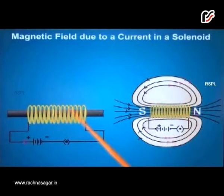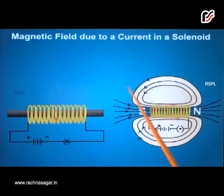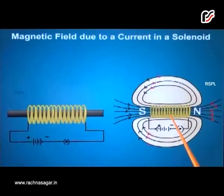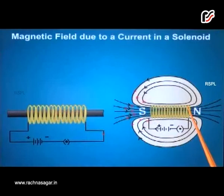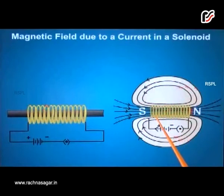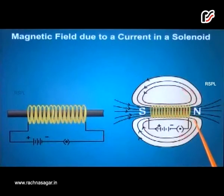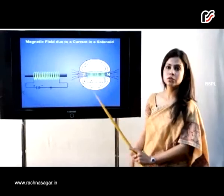When copper wire is wound in many turns in the shape of a cylinder, it is called a solenoid. When current is passed through the solenoid, it produces a magnetic field. The magnetic field produced through a solenoid emerges from the north pole and merges to the south pole of the solenoid. Inside the solenoid, the magnetic field lines appear almost as parallel lines, traveling from the south pole to the north pole of the solenoid.